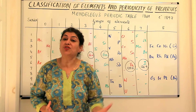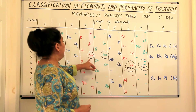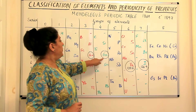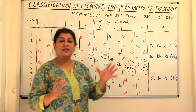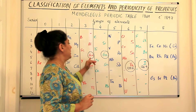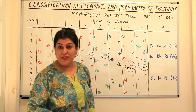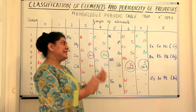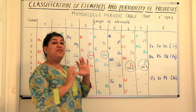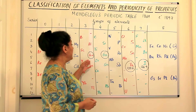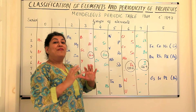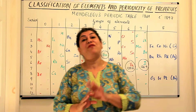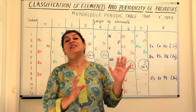He even predicted the properties of these elements. Gallium was placed under aluminum and he called it eka-aluminum; germanium was placed under silicon and he called it eka-silicon. These names were given later when the elements were discovered, but when they were, their properties were found to be very similar to what Mendeleev had predicted.